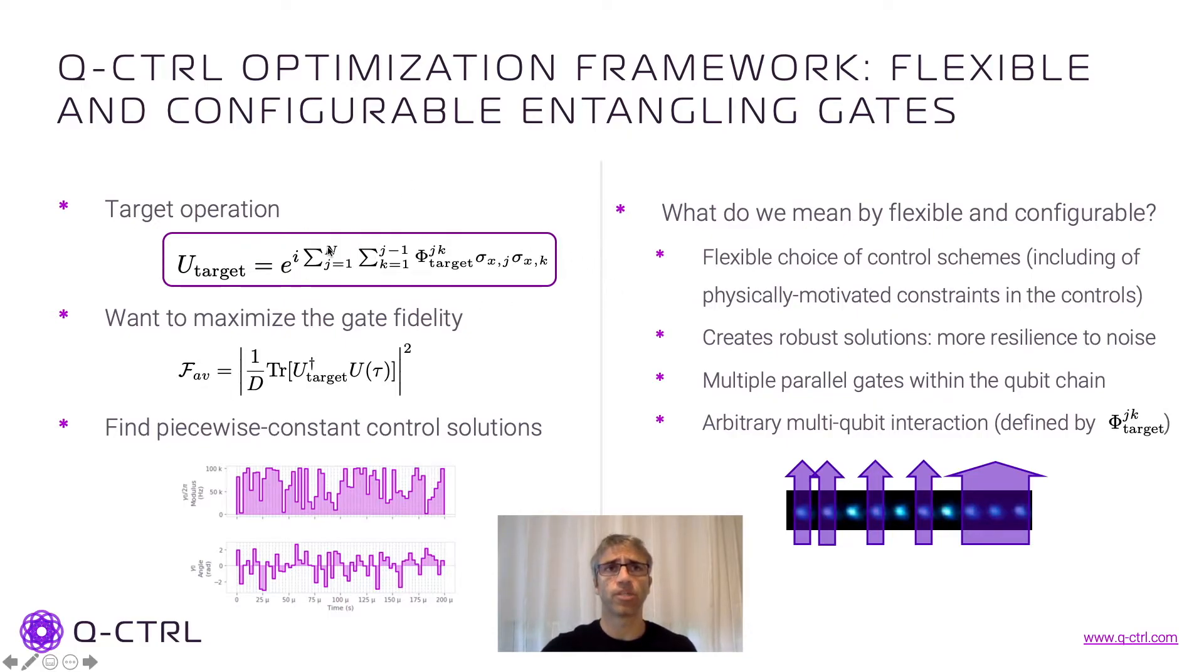We have a target operation, which is the operation that I just described to you. And then we have a cost in our optimizer which is related to the fidelity of the gate. And then we will find solutions which are given in terms of piecewise controls. You're going to see lots of these plots.